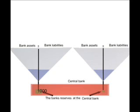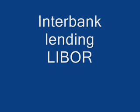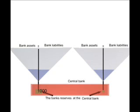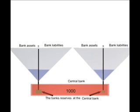Note that nothing is changed in the bank's balance sheet. But the first bank's reserves have now shrunk below the reserve requirement, so it will have to lend some central bank money back from, for instance, the bank that received the $1,000, since this bank now has a surplus of central bank money. The second bank can then lend back the money to the first bank at an interest — the so-called LIBOR rate — and restore the first bank's reserves.